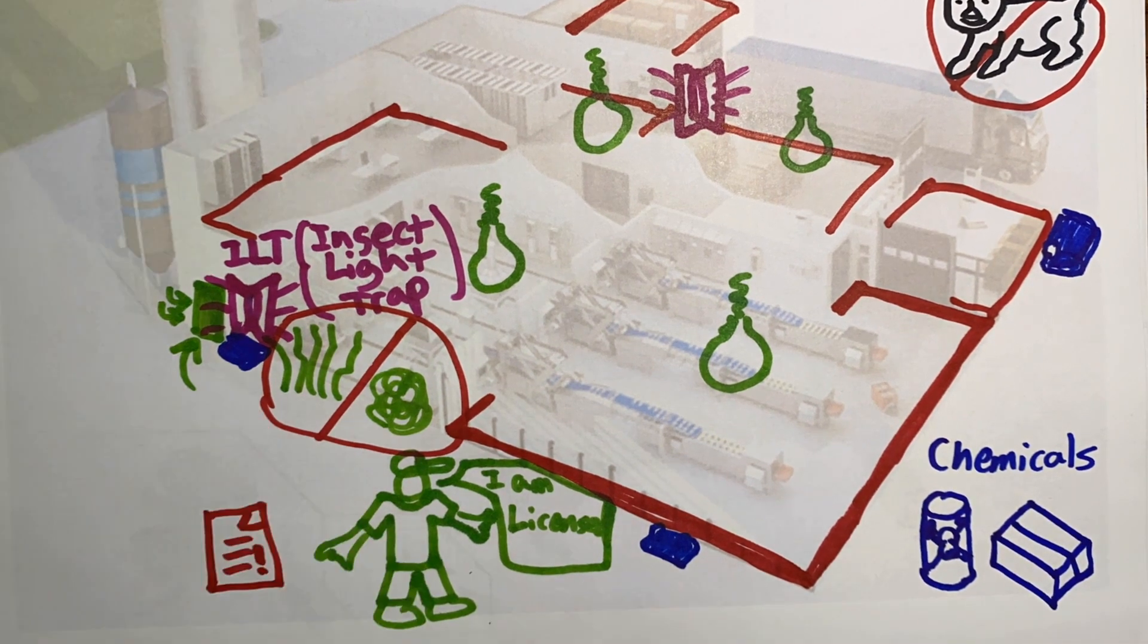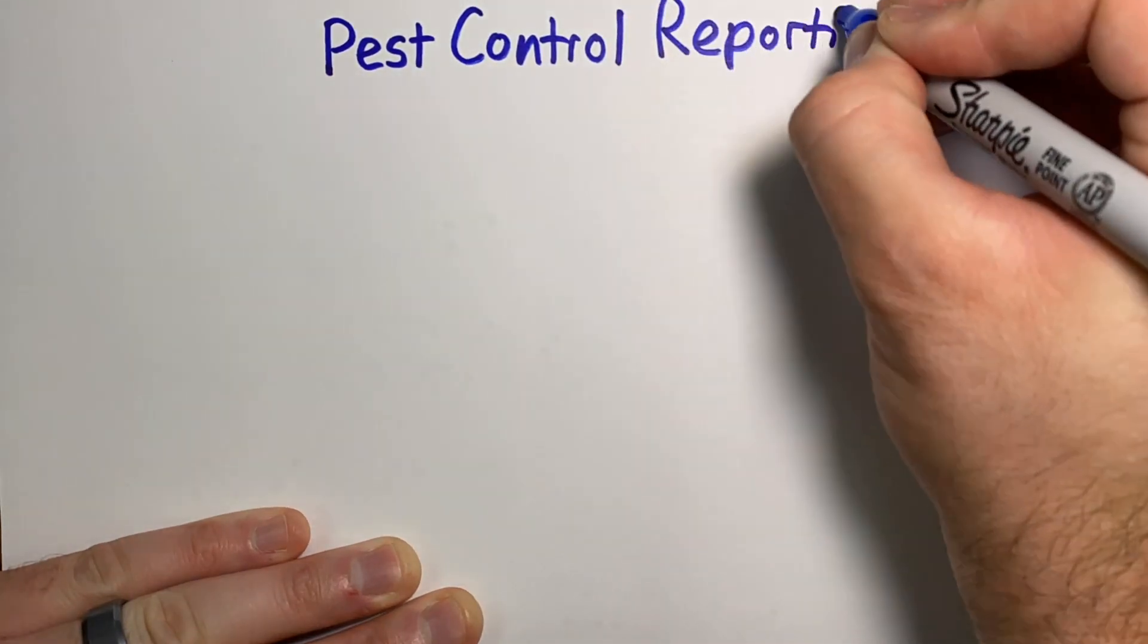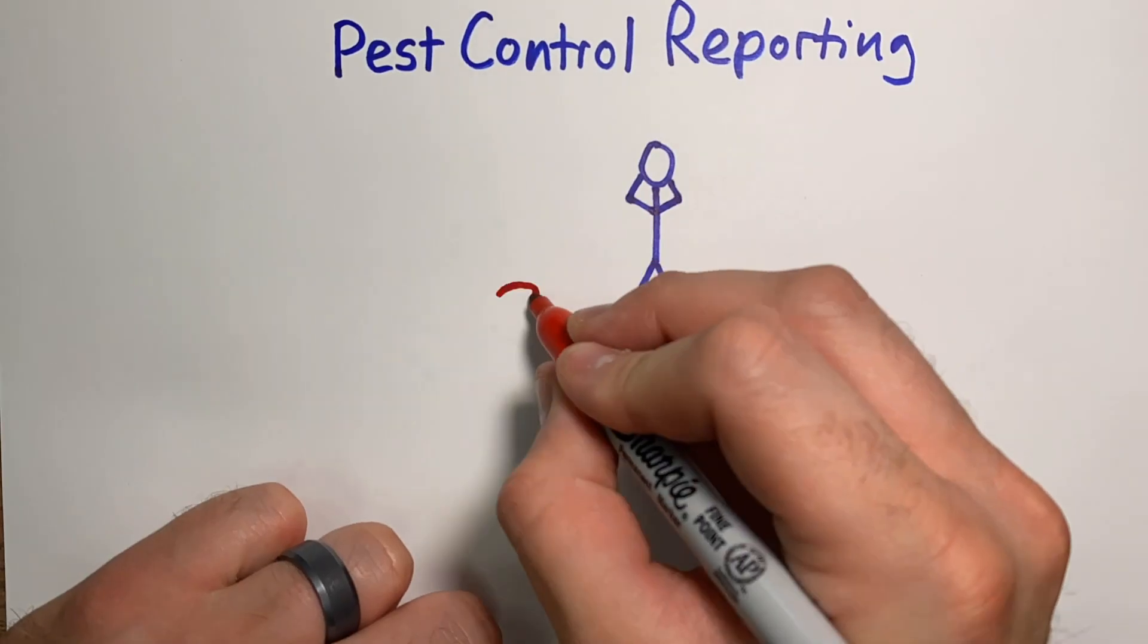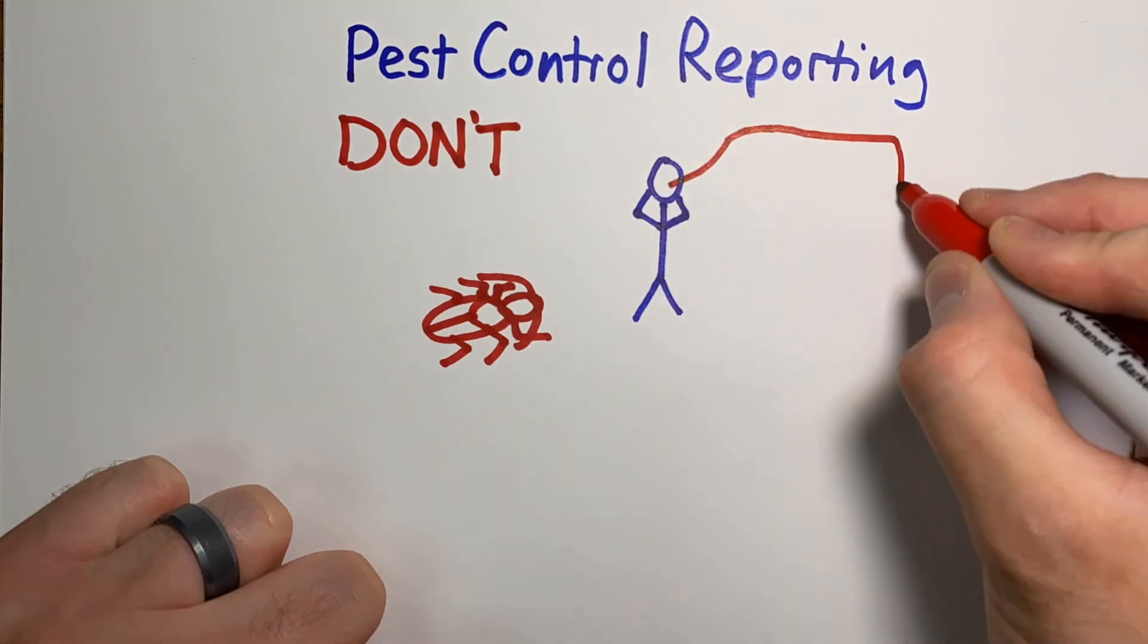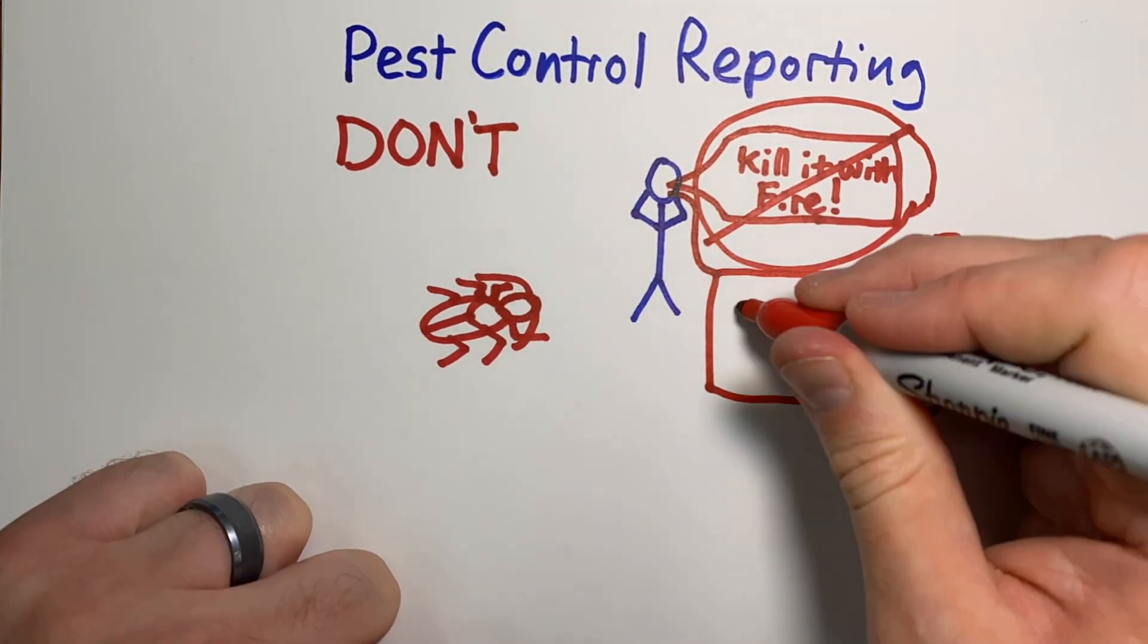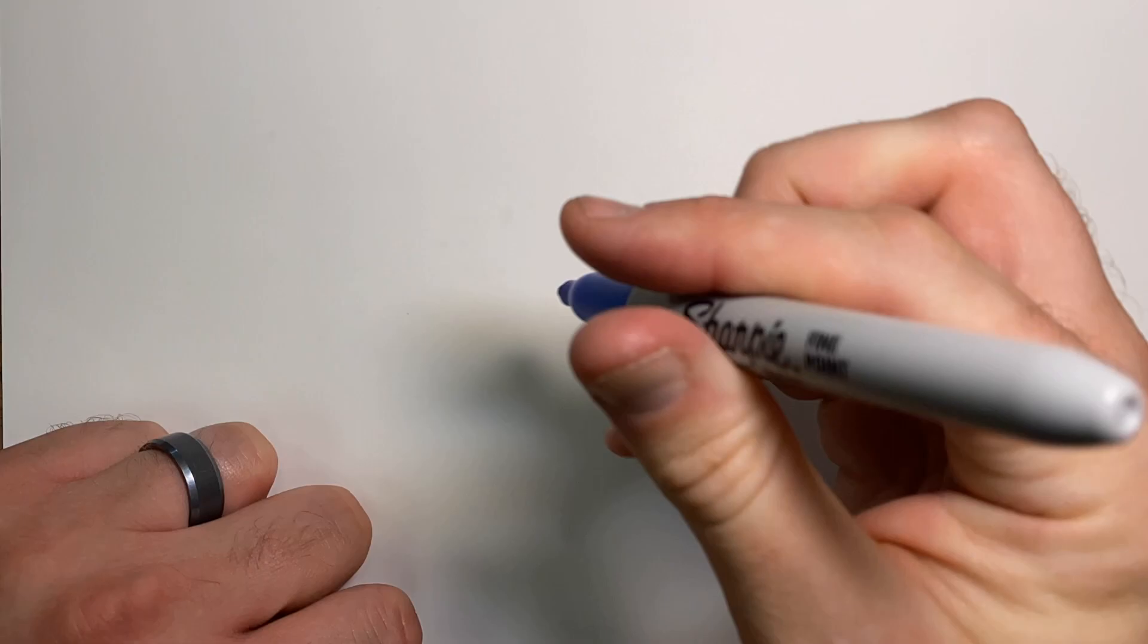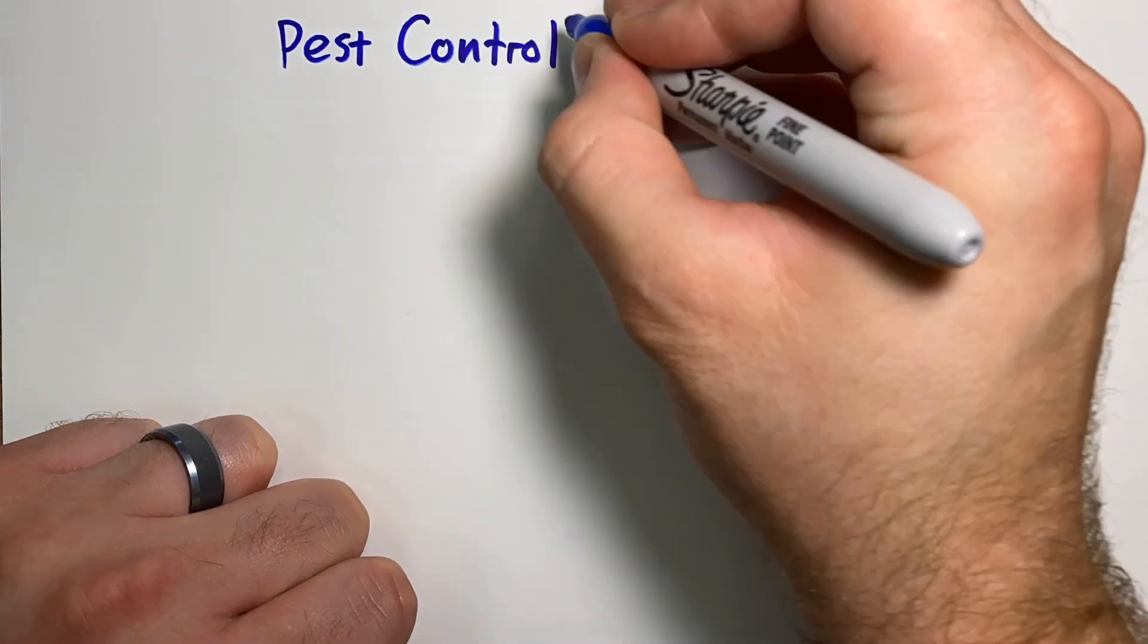We already discussed why pests are a problem and what goes into a good program. Now let's talk about how to report things properly. First, let's talk about what we don't want to do. You don't want to scream and run away. You don't want to ignore it. You want to report it.